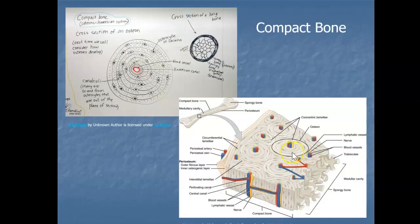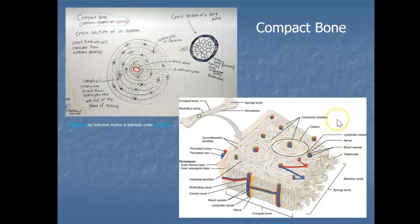Looking at the microscopic structure of compact bone, the structural unit is called an osteon, also known as a Haversian system. Each osteon is composed of rings of calcified matrix called lamellae — each ring is one lamella. Running down the center of each osteon is a central canal, also called the Haversian canal, which contains blood vessels, nerves, and lymphatic vessels.